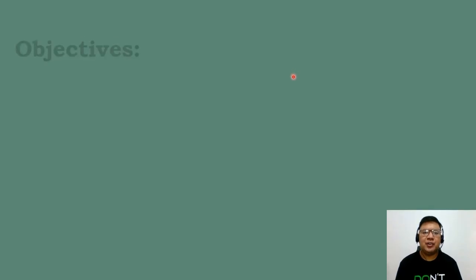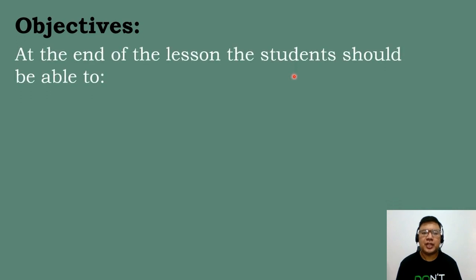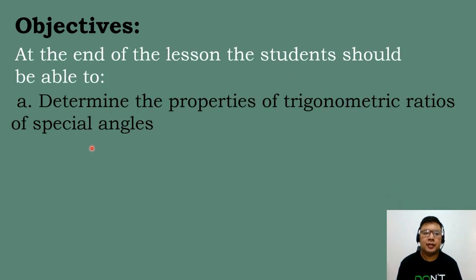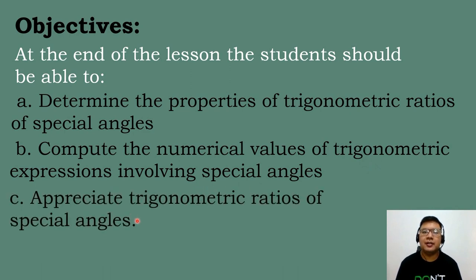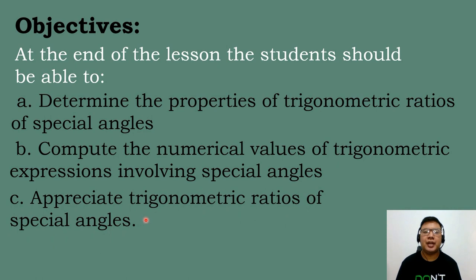These are the following objectives we need to attain for today's topic. Letter A, determine the properties of trigonometric ratios of special angles. Letter B, compute for the numerical values of trigonometric expressions involving special angles. And letter C, appreciate trigonometric ratios of special angles.